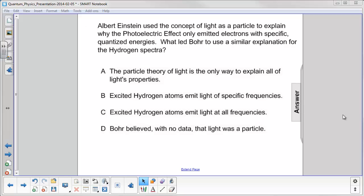Hydrogen atoms do not emit light at all frequencies. They have very specific frequencies that are emitted, which of course is B.